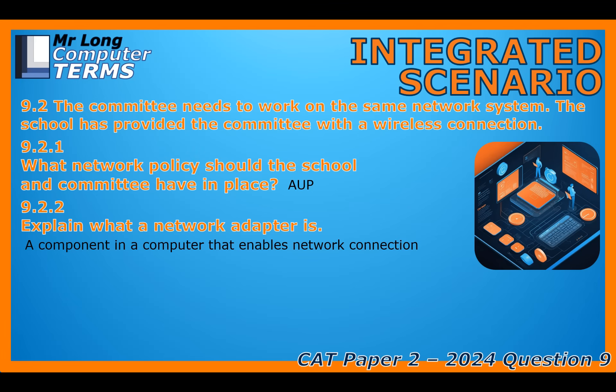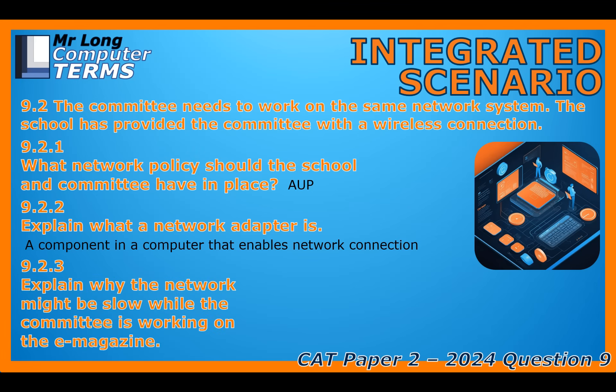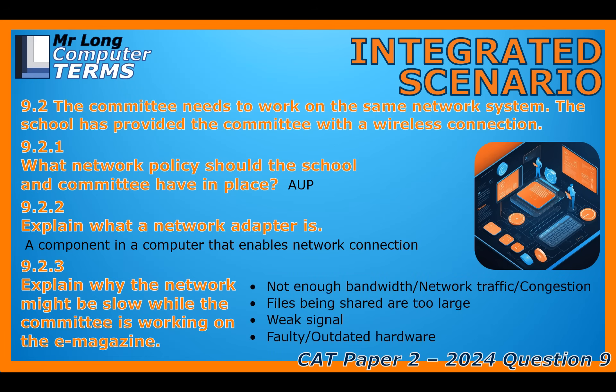Now let's talk about that classic frustration during collaboration. They're trying to share and edit huge image files for the e-magazine, and suddenly the network slows to a crawl for everyone. What's the strategic computing knowledge we can apply to troubleshoot that lag? The sources generally point to three main categories of problems. First: capacity. If everyone is uploading massive files at the exact same time, you get too much network traffic or congestion — essentially not enough bandwidth available to handle everything smoothly.